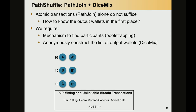Second, we actually need a way to construct this anonymous list of output wallets. For that, we use a protocol defined this year at NDSS called DashMix. The main idea is that each user submits the output wallet they want to use in the protocol, and they mix them together. So in some manner, they get the list of output wallets, but they don't know the link between each output wallet and its owner.